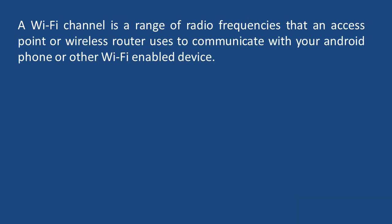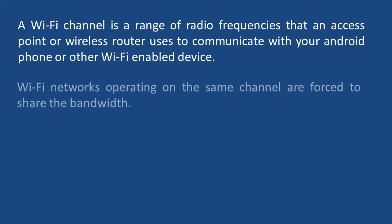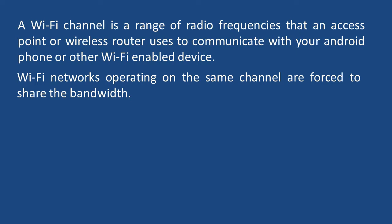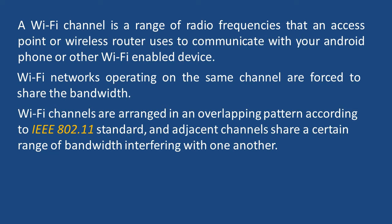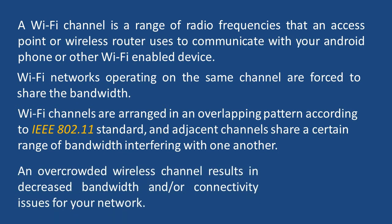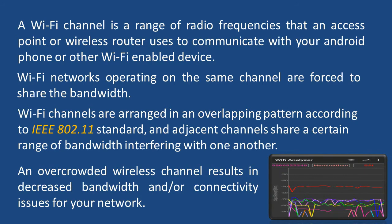A Wi-Fi channel is a range of radio frequencies that an access point or wireless router uses to communicate with your Android phone or other Wi-Fi enabled devices. Wi-Fi networks operating on the same channel are forced to share the bandwidth. Wi-Fi channels are arranged in an overlapping pattern according to the IEEE 802.11 standard, and adjacent channels share a certain range of bandwidth, interfering with one another. An overcrowded wireless channel results in decreased bandwidth or connectivity issues for your network.